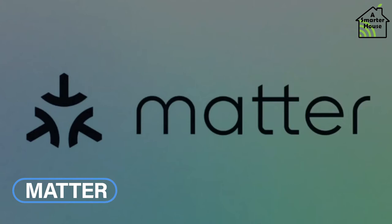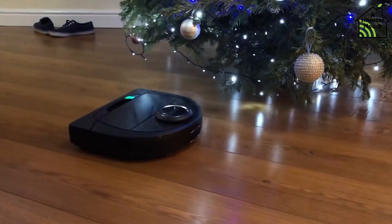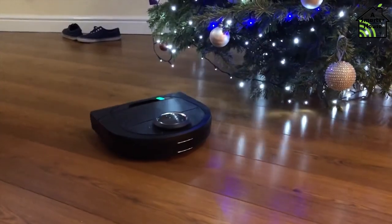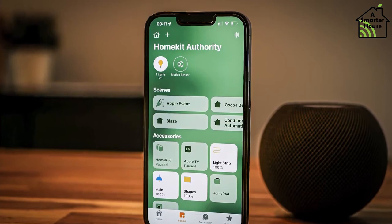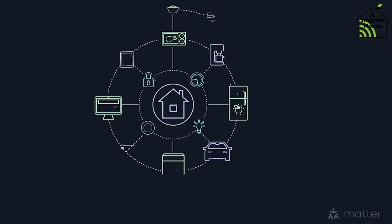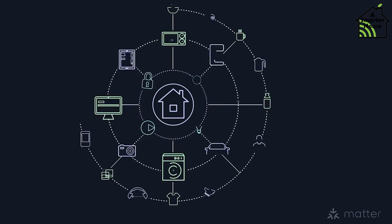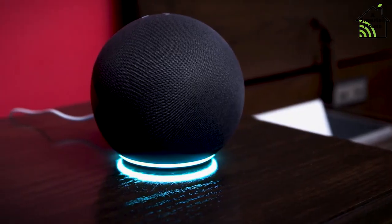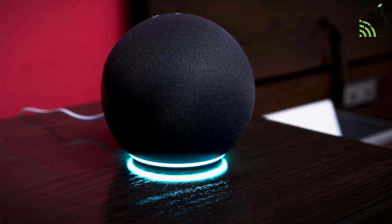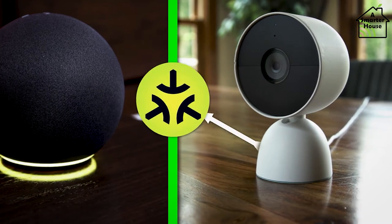MATTER is the name of a unifying connectivity standard that will be supported by the majority of smart home gadgets in the near future. According to the Connectivity Standards Alliance, MATTER is essentially a stamp of approval that smart gadgets perform reliably together. MATTER, which is based on internet protocol, will enable IP-based networking between smart home devices and the smartphone apps or cloud services that make such devices useful. Devices with MATTER compatibility will initially connect to Thread and Wi-Fi networks via Bluetooth Low Energy.